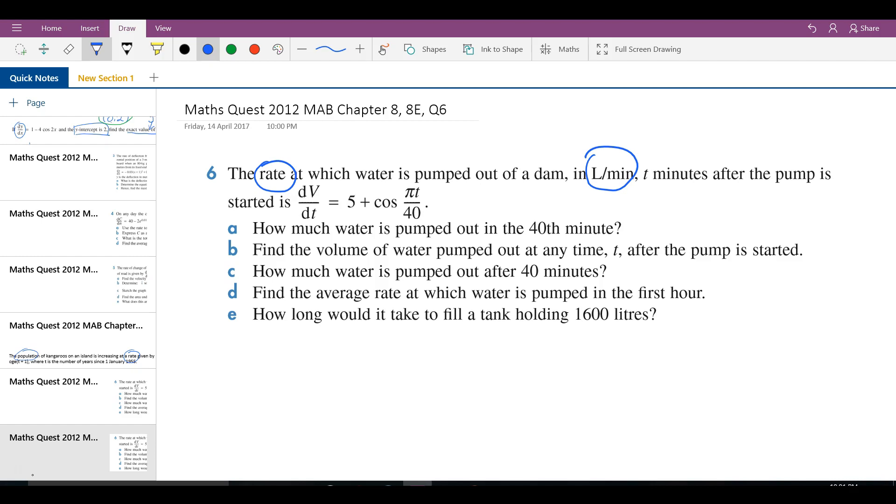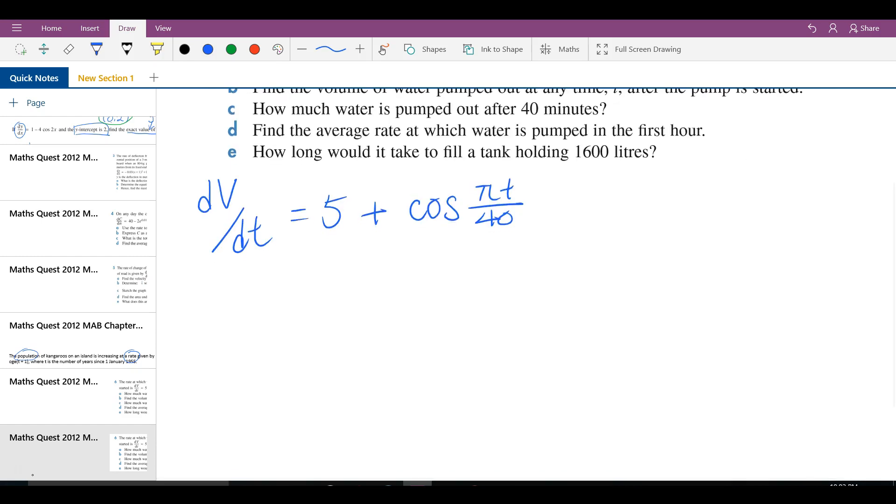So the first question, how much water is pumped out in the 40th minute? Now this time is asking you for the 40th, not 40 minutes, but the 40th minute. So we're looking for how much water is pumped out. So the rate is which is pumping out there. So we're looking at we're using our rate function, dV over dt is equal to five plus cos pi T over 40.